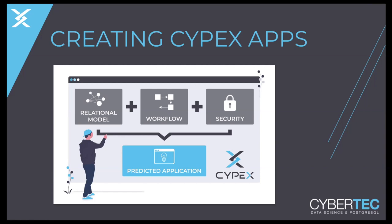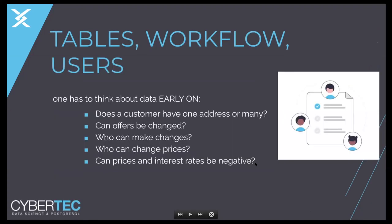The key challenge is to make all those components so quick to create that you just generate the application, throw it away, generate a new one, make some changes, and so on. The core idea is: does the customer have addresses or many addresses? Can offers be changed? Who is allowed to make changes? If you ask all those questions early on in an interactive way, it's far better than turning something you don't know into specifications, giving them to somebody with no clue, who turns it into code, with 10 people in between obfuscating what the customer really wants.